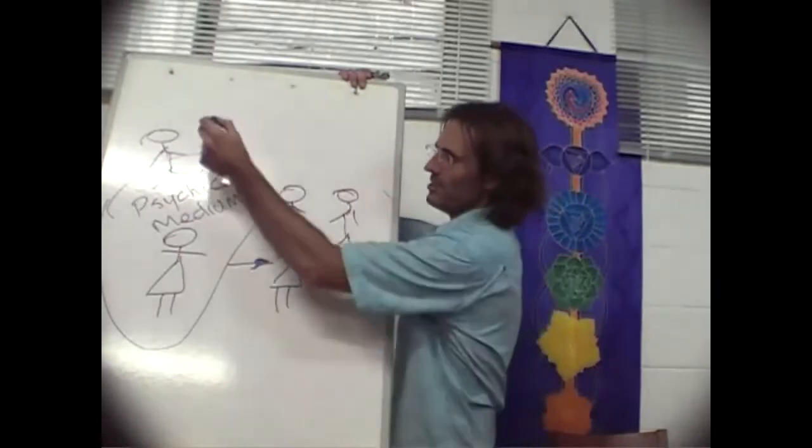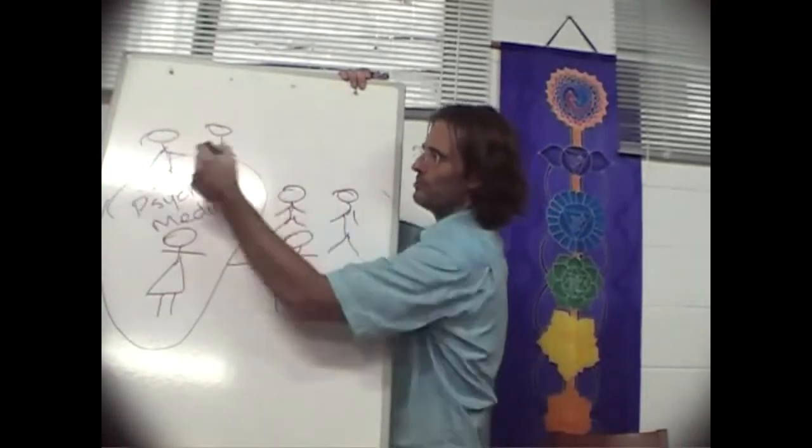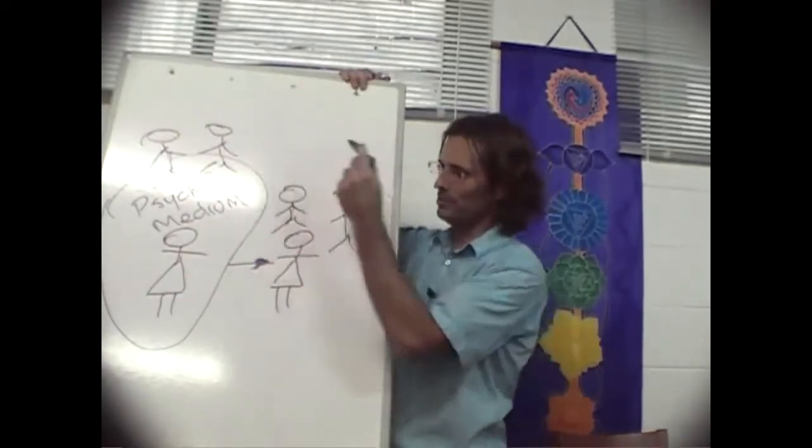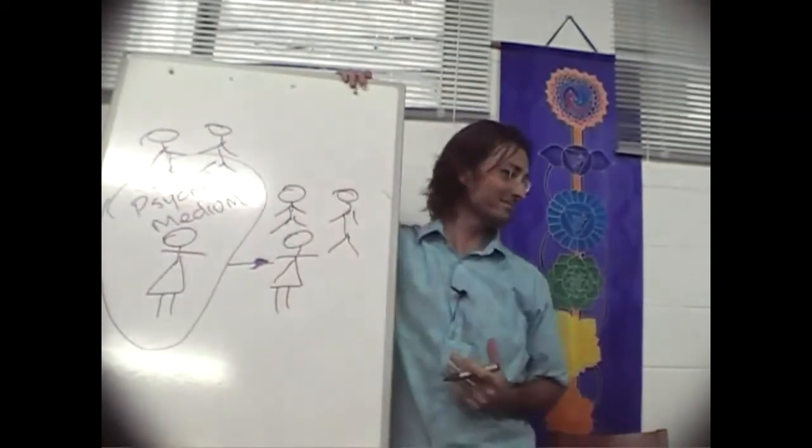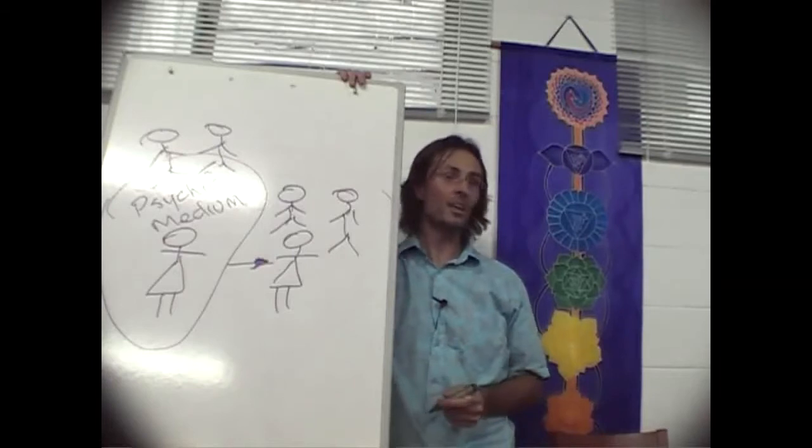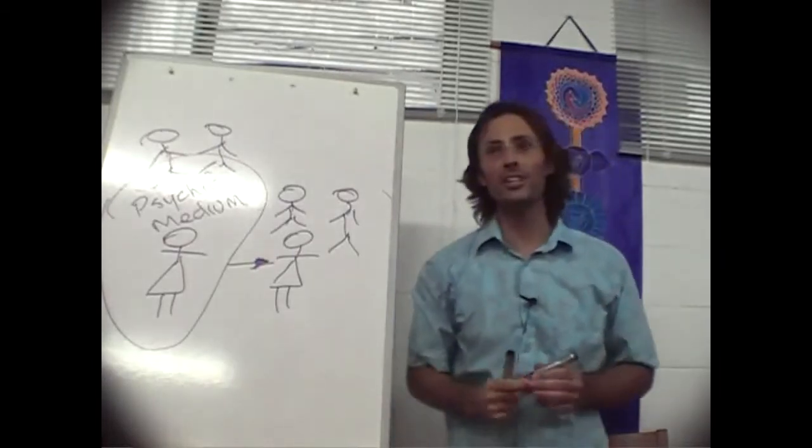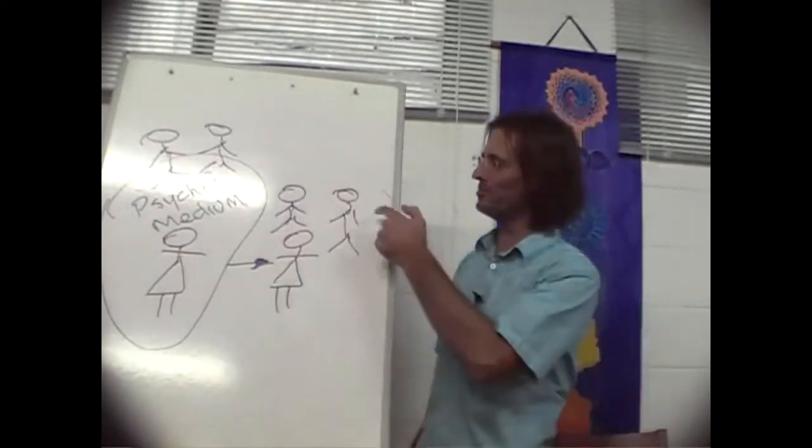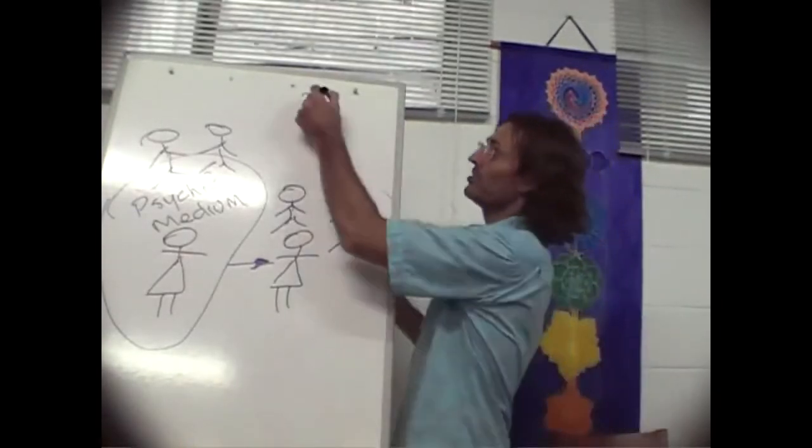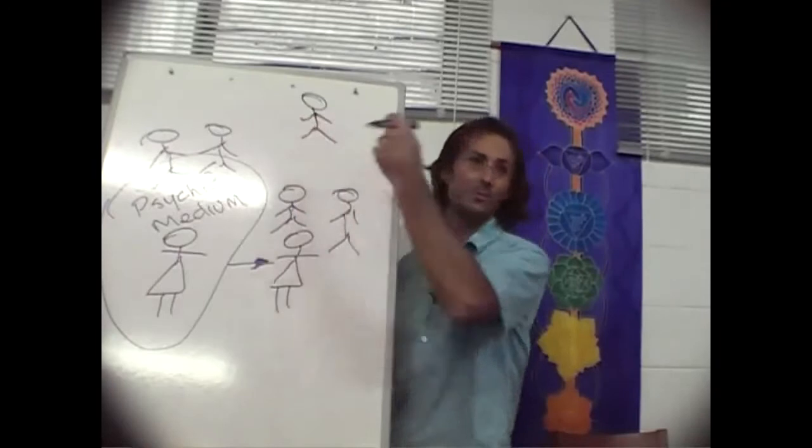And the reason why is because this psychic has all these spirits around them. You have all these spirits around you. And this person is sensitive to all of that emotion. And they can't differentiate which bit was your emotion, which bit was this one's emotion, which bit was this one's emotion, which bit was this guy's emotion way up here in the spirit world.